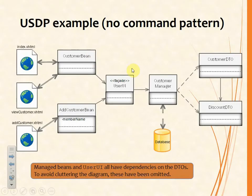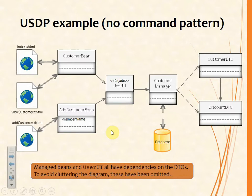What will happen here is that the customer manager will consult the database, extract data, put that data into a DTO, and then pass the DTO to other parts of the application. You'll notice that essentially all these classes have got some dependency on the DTO, but to prevent the diagram becoming overly cluttered and confusing I've omitted those for now.